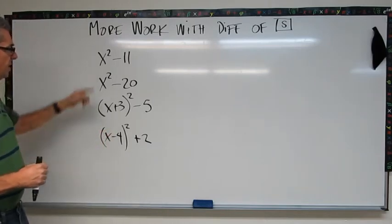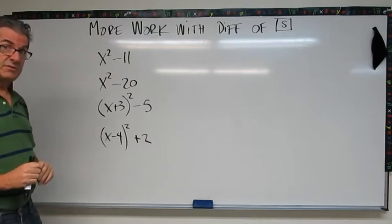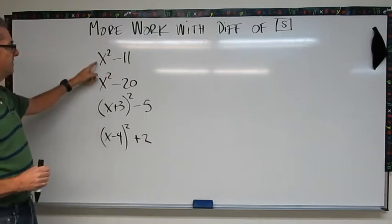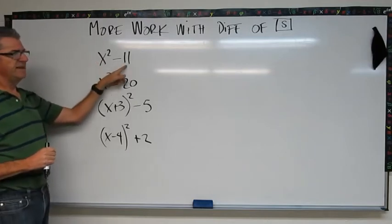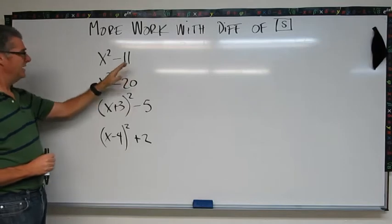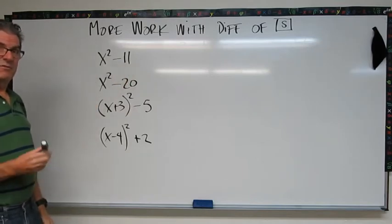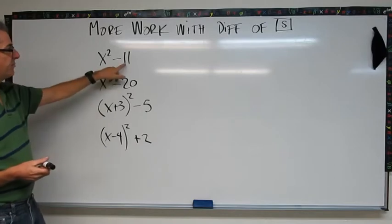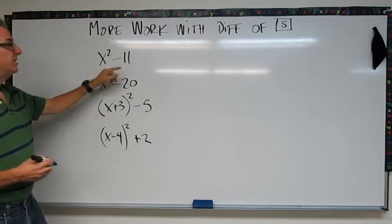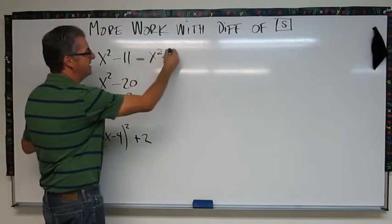Four problems here that aren't gonna look similar to the last ones because they aren't. Check this out: x squared minus 11. 11 is not a perfect square, I can't factor out any GCFs. How might I do that? Well the answer lies in expressing 11 as a square. So check this step out: x squared minus root 11 squared.